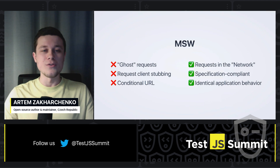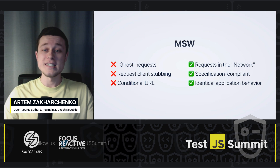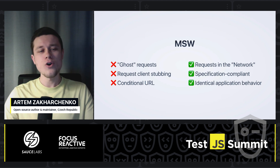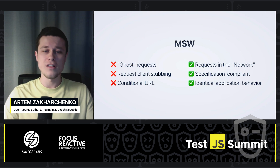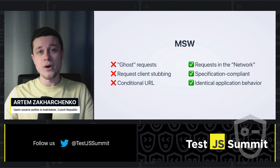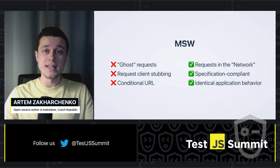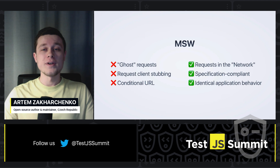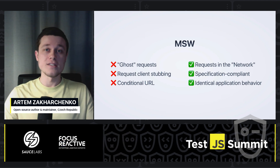Now with MSW, due to service workers, there is no more ghost requests — requests that never happen. Instead, you can clearly see requests in the network tab because they actually happen, the same as in production. There is no more request client stubbing — we don't meddle with fetch or other libraries. And because of that, we're getting full specification compliance, because the request client is called and the response is composed on the service worker side. If any of these parts is invalid, an exception will be thrown. And there's also no more conditional URLs — because of the service worker, we can get identical application behavior, the same as our app does in production.